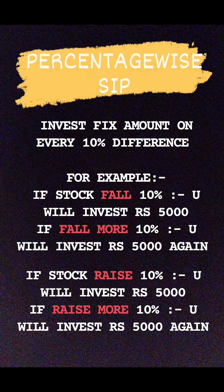Percentage-wise SIPs: in this you have to invest a fixed amount on every 10 percent difference. For example, if the stock falls 10 percent you invest rupees 5000; if it falls a further 10 percent you invest rupees 5000 again. Similarly, if the stock raises 10 percent you invest rupees 5000, and if it raises a further 10 percent you invest rupees 5000 again. The key difference is that you invest on every 10 percent fall or rise.